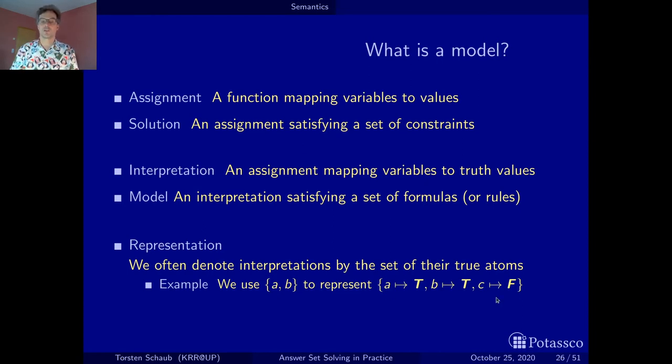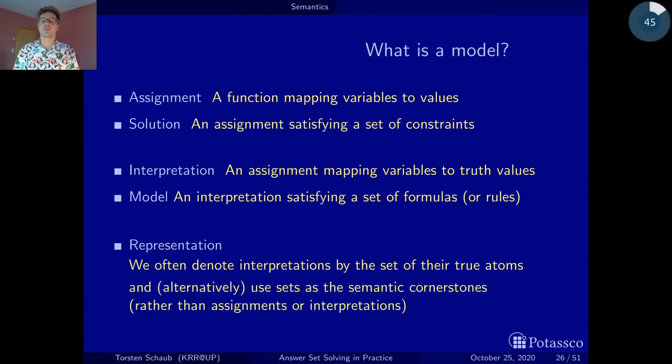Let's look at an example. This is our interpretation that we have been looking at before, where A becomes truth value true and B becomes truth value true, and we represent this simply by the set that contains A and B, with the convention that these are true and all the atoms that have been left out, in our case C, are assigned the truth value false.